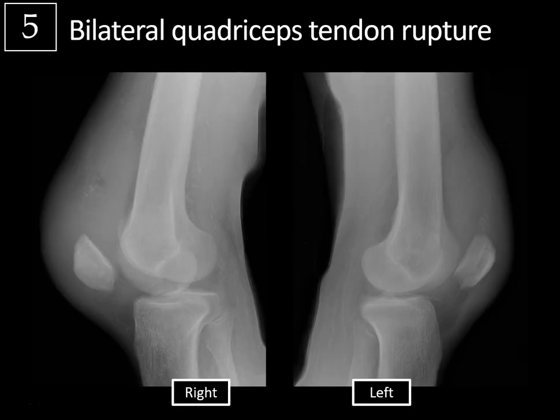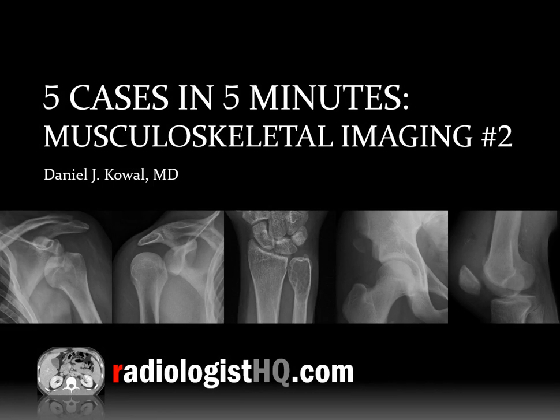Case 4 — anterior superior iliac spine avulsion fracture and lesser trochanteric avulsion fracture. Remember this in your search pattern for pediatric athletes. Most commonly, avulsion fractures occur at the ischial tuberosity related to the hamstring. The ASIS is where the sartorius and tensor fascia latae attach; the lesser trochanter is where the iliopsoas attaches. Case 5 — bilateral quadriceps tendon rupture: look for patella baja. Quadriceps tendon rupture occurs more commonly in patients with underlying abnormality like connective tissue disease, corticosteroid use, and end-stage renal disease. That is it for 5 Cases in 5 Minutes, MSK Imaging No. 2.